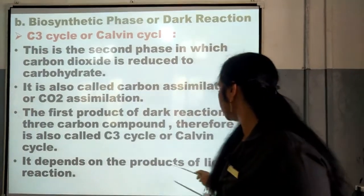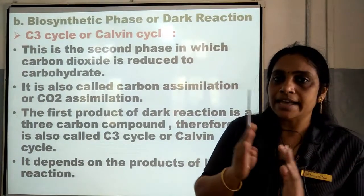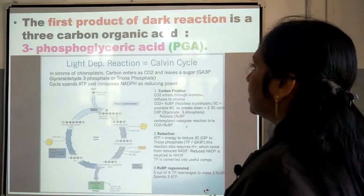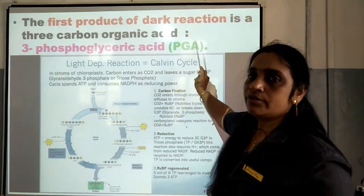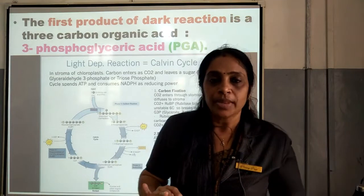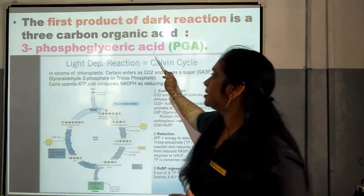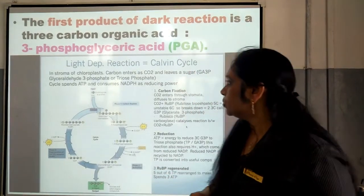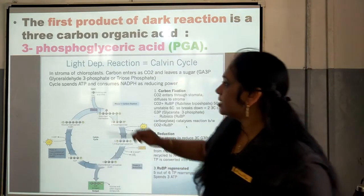This cycle is dependent on the products of light reaction, that is ATP as well as NADPH2 is utilized in this cycle. The first product of dark reaction is the 3-carbon organic compound, that is 3-phosphoglyceric acid, also known as PGA. This is very, very important — in the first paper, they ask to name the first product produced in C3 cycle. The answer is 3-phosphoglyceric acid or PGA. The full form of PGA may also be asked. The light-dependent reaction is called Calvin cycle and it is taking place in the stroma.